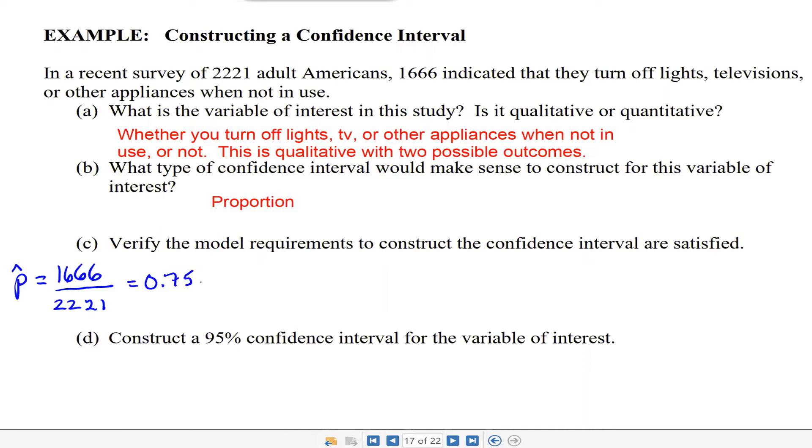So it's x over n. Now to construct a confidence interval for a proportion, n times p hat times 1 minus p hat has to be at least 10. So we have 2,221 times 0.750 times 1 minus 0.750, which gives us 416.4, which is certainly at least 10.